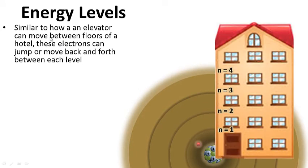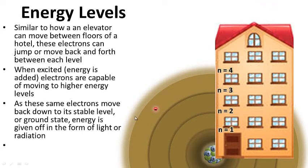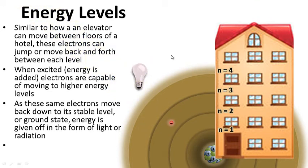Similar to how an elevator can move between floors of a hotel, electrons can jump or move back and forth between each level. When excited — when energy is added, such as heat or electricity — electrons are capable of moving to higher energy levels. As these electrons move back down to their stable level, or ground state, energy is given off in the form of light or radiation.